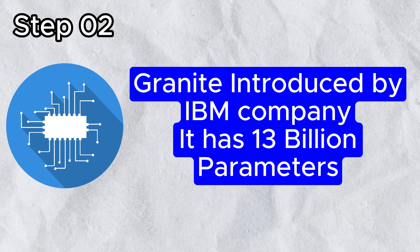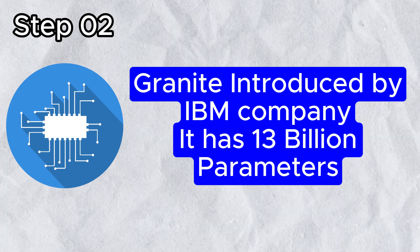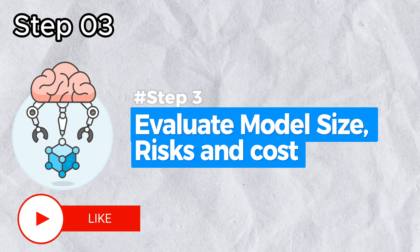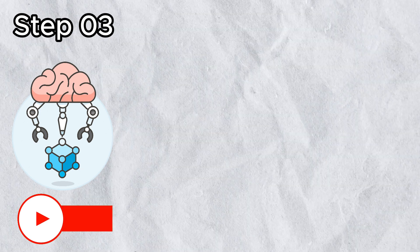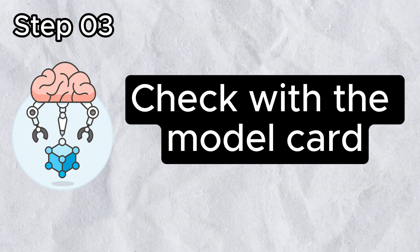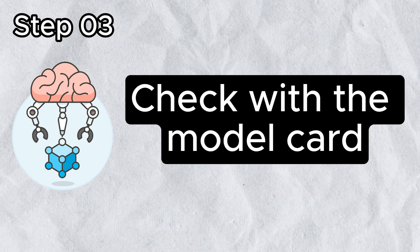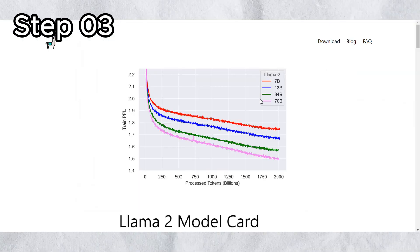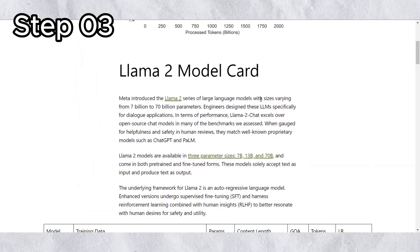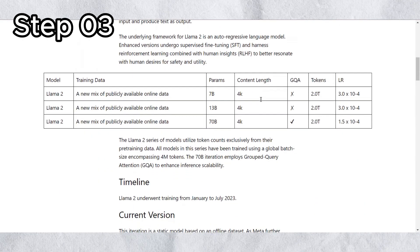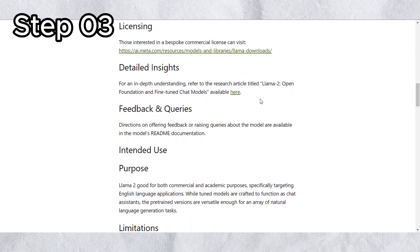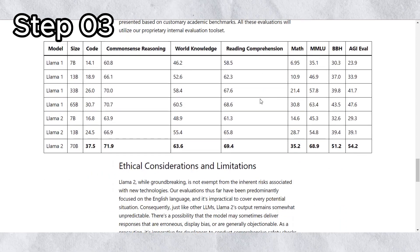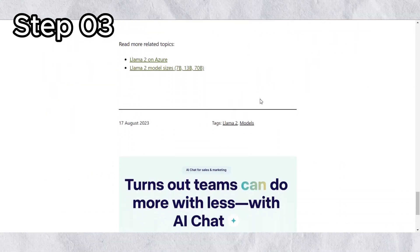This is an IBM account. There are 3.7 billion parameters. This is how we evaluate the size and the risk of the model. This is how we check the model card. The model card is a very important documentation. There are many details of the model card that you can train, including sentiment analysis, document summarization, text generation. The pre-trained model is also very important.